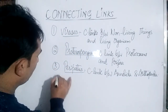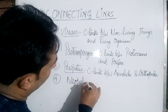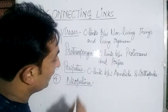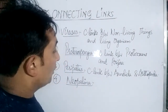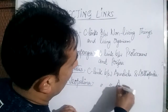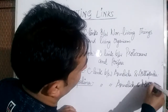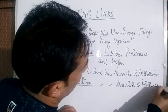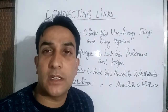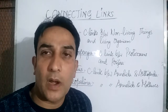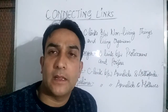There is another connecting link — Neopilina. Neopilina shows some characters of annelids and some characters of Mollusca. So it is a connecting link between Annelida and Mollusca. By this we make a point that Mollusca have also evolved from Annelida.